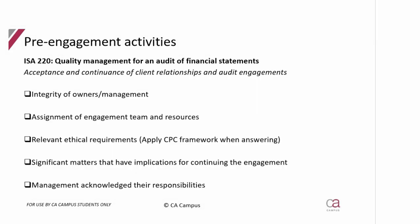ISA 220 has undergone a change, just like ISQC1 changed to ISQM1. ISA 220 has changed from quality control for an audit of financial statements to quality management for an audit of financial statements. It is an important name change, but not a significant principle change — the principles and structure remain similar. The paragraph we are focusing on today is acceptance and continuance of client relations and audit engagements.